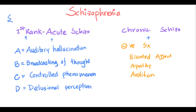When you don't feel anything and don't want to do anything, you isolate yourself — you become withdrawn and socially isolate yourself. You don't talk to anyone; that is poverty of speech. Poverty of speech is also known as alogia — 'logia' means speech, so alogia means poverty of speech.